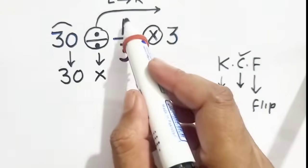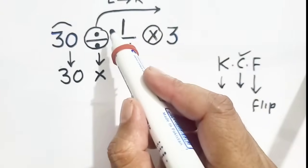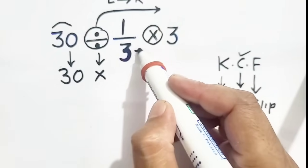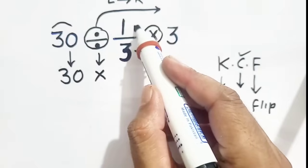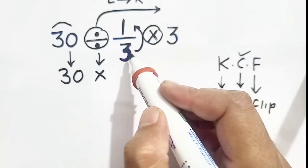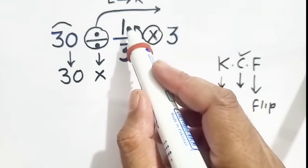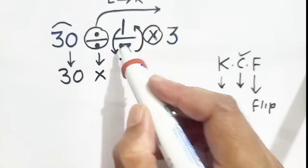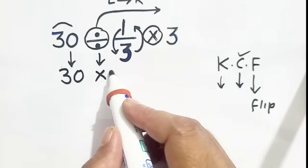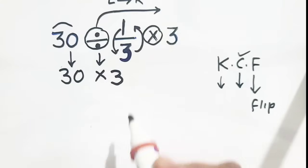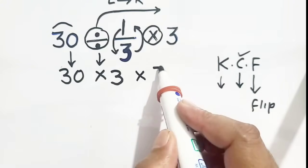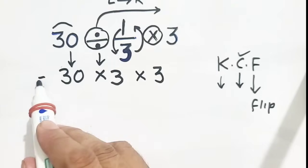Flip means we take its reciprocal. It is 1 over 3, so numerator and denominator switch places, and it will become 3 multiplied by 3.